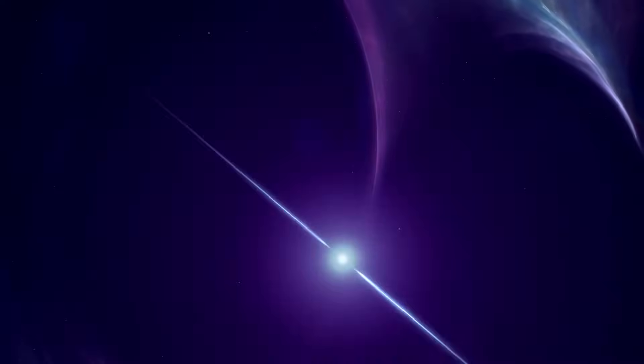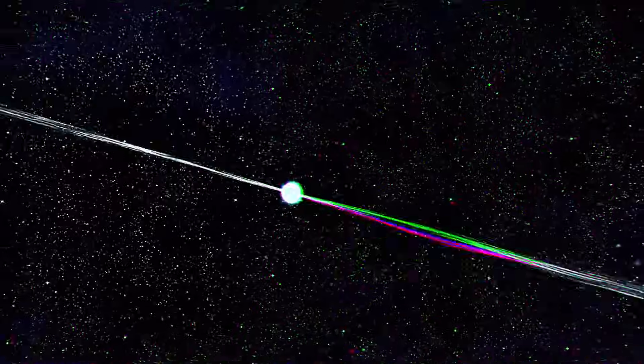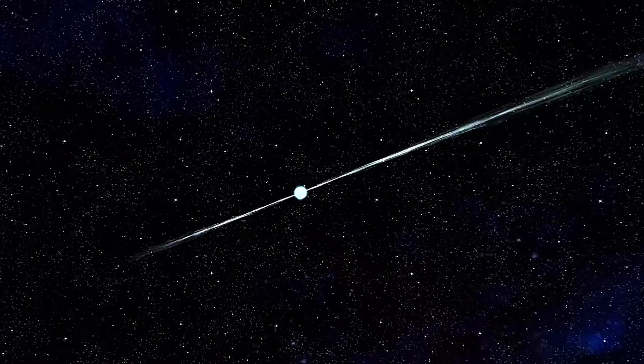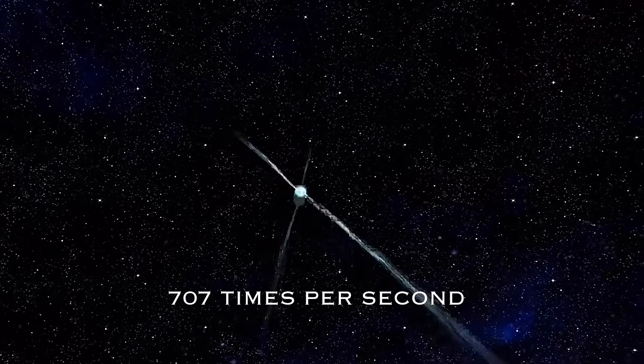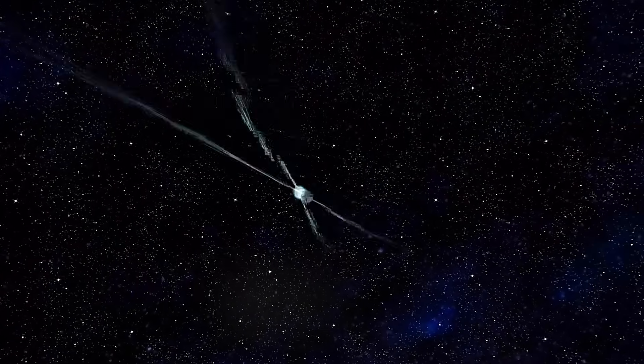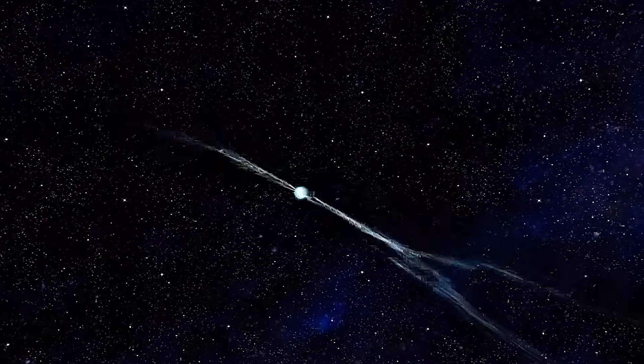What makes J0952-0607 particularly extraordinary is not just its enormous mass, but also its incredible rotation rate. This stellar remnant spins a dizzying 707 times per second, making it the second fastest spinning pulsar ever discovered.